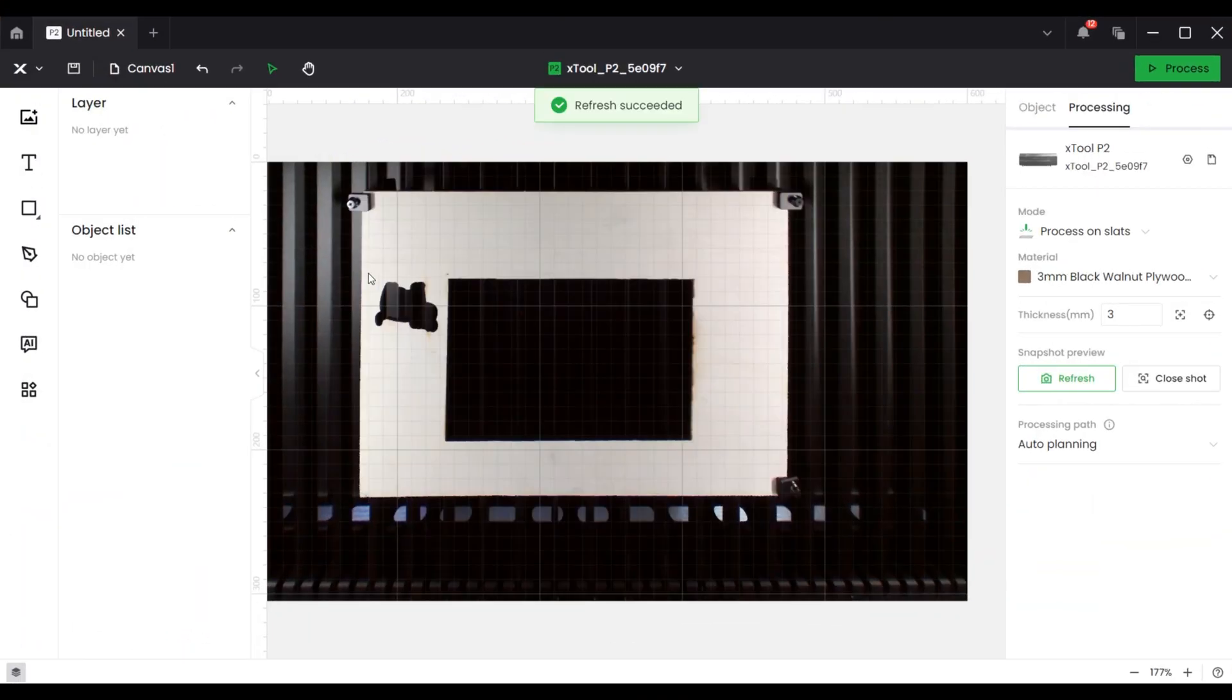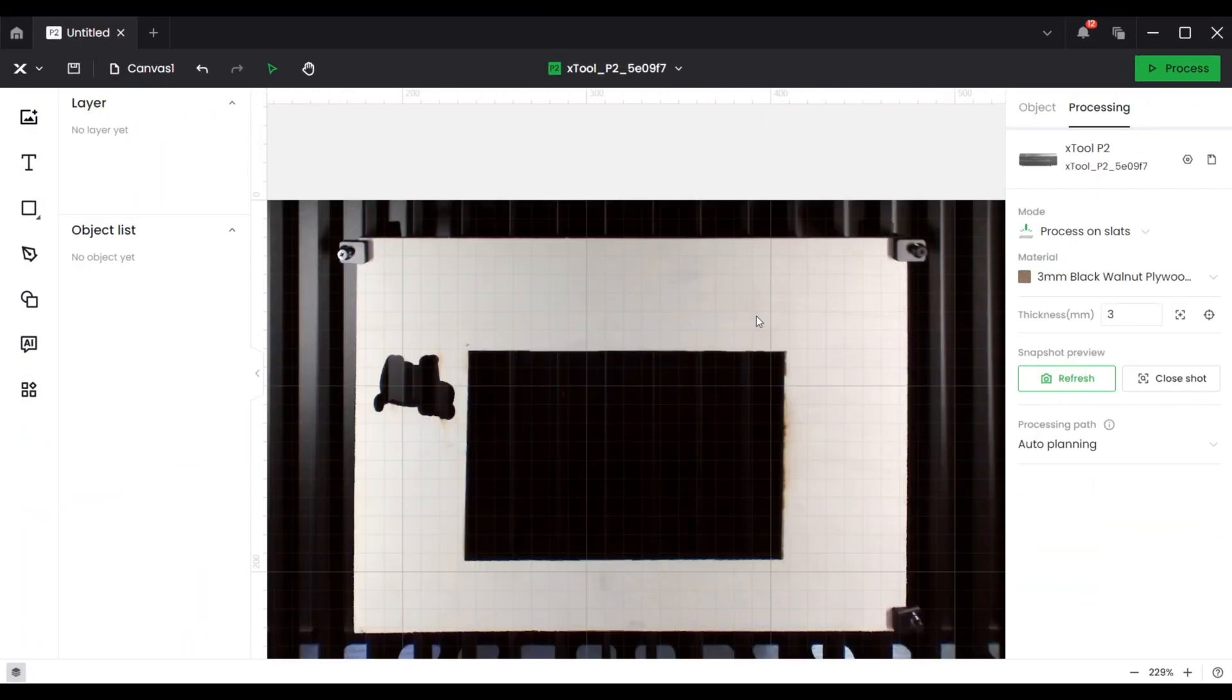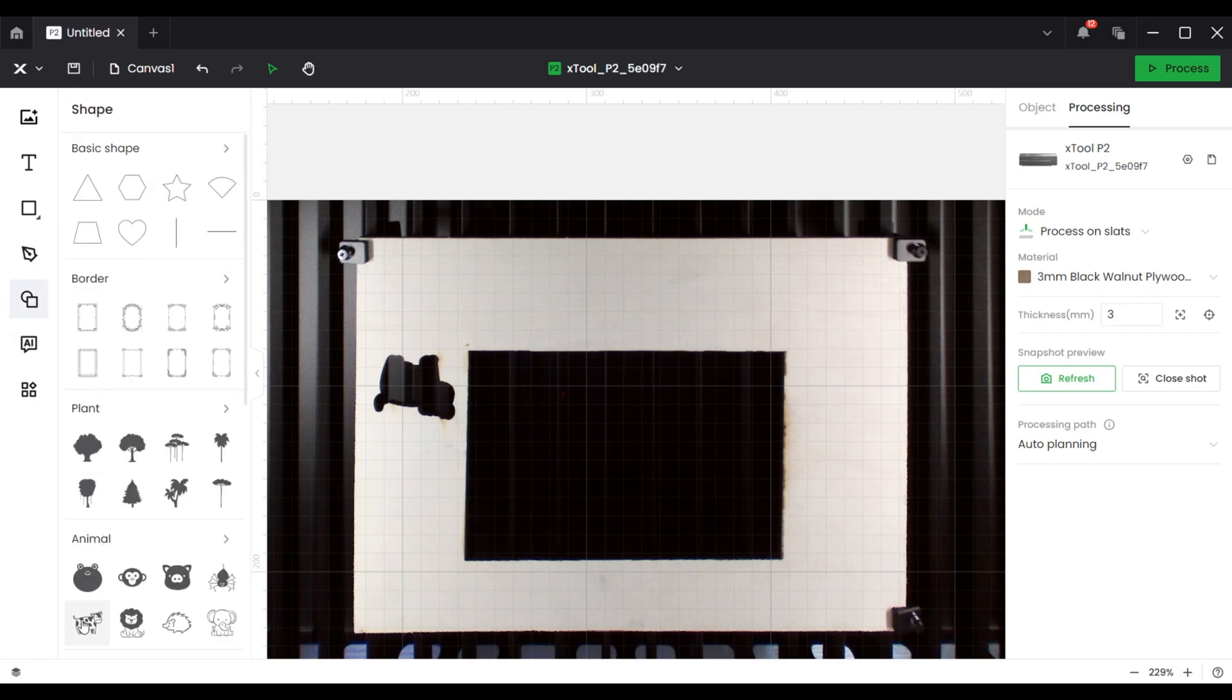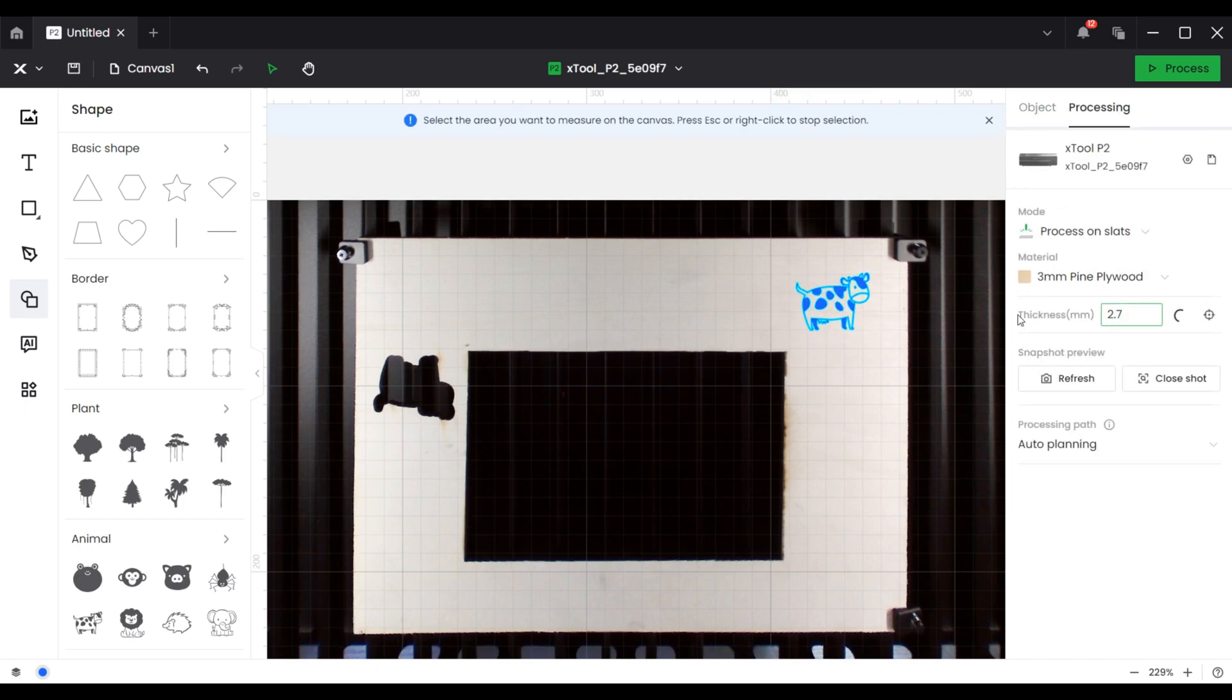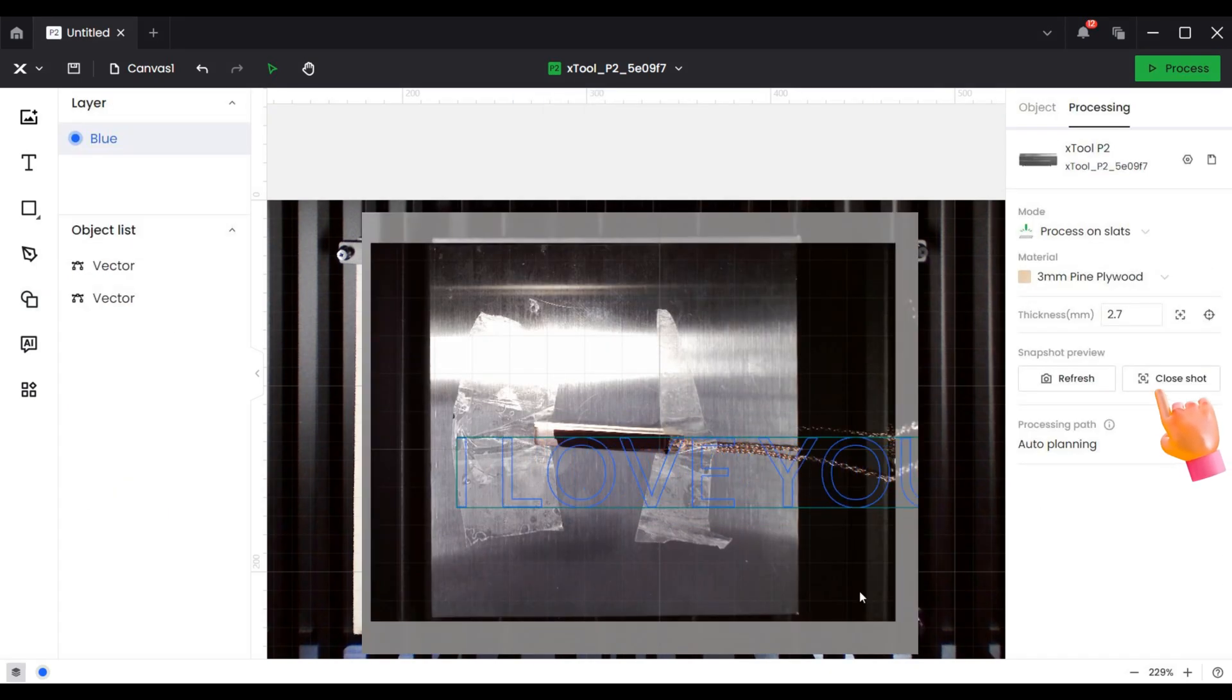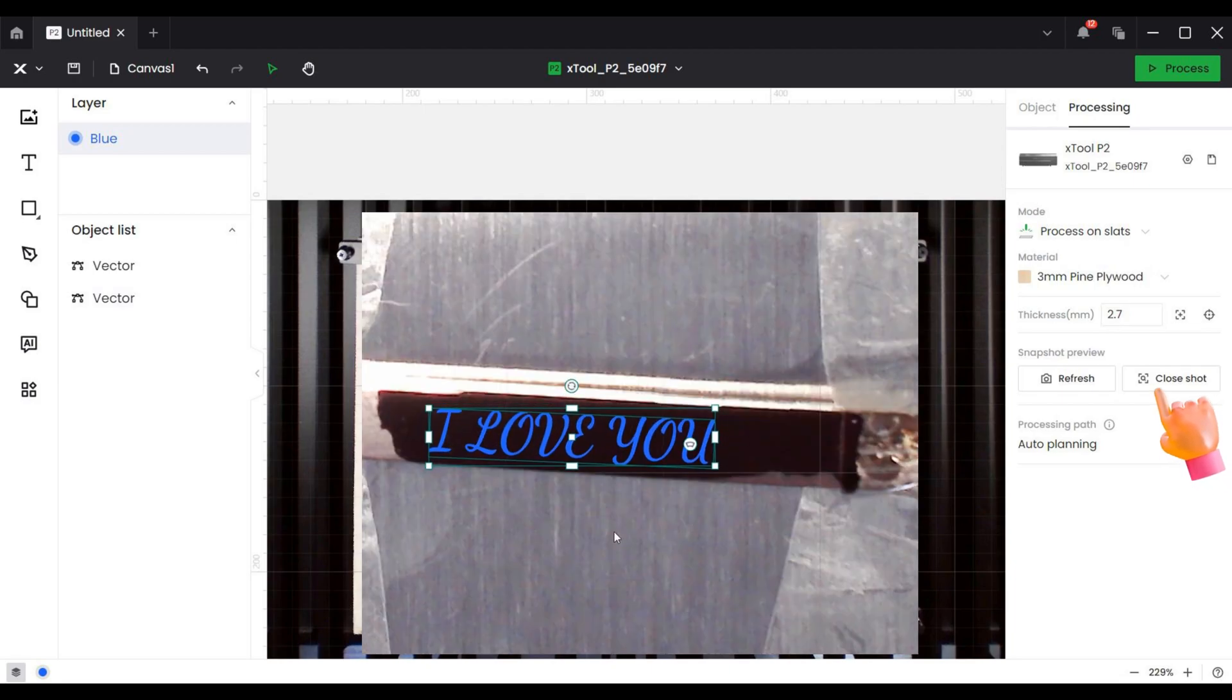Because the X2P2 has built-in dual high-definition cameras, I can recognize the material very clearly on this X2 creation space software. It is very easy for me to do autofocus operations and positioning of the engraving on the software. I can also use the close-up button for small objects, which makes it easier to recognize the outline of a small object.